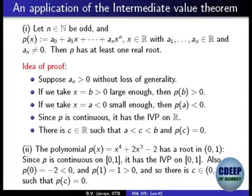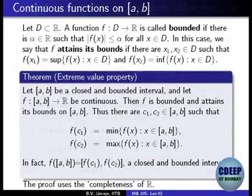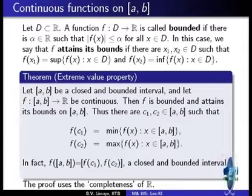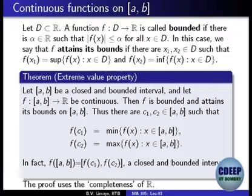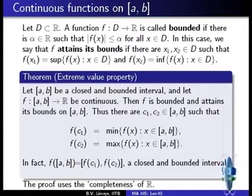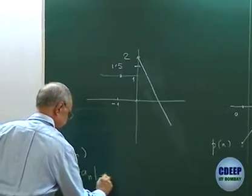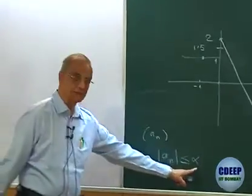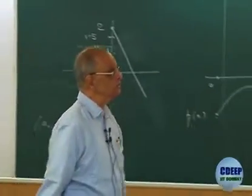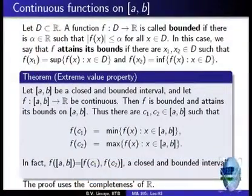This completes what I wanted to do last time. We begin with a new property of continuous functions: the extreme value property, also known as the extreme value theorem. Before stating it, I want to recall what is meant by a function being bounded. A bounded function — just like a bounded sequence — means |f(x)| ≤ α for all x in the domain and for some fixed α.